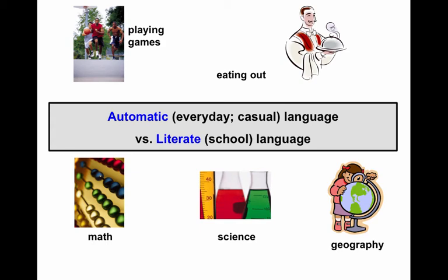Notions like evaluate, compare, and synthesize — students are expected to understand what those terms mean and how to use them across different classes and content areas. A student who shows up struggling to understand academic language might actually demonstrate a strength in everyday language. It's important for teachers to observe students in multiple settings and engage them in conversations that allow them to demonstrate how they use language in different ways, so we can really understand what a student's strengths are and where their struggles might be.